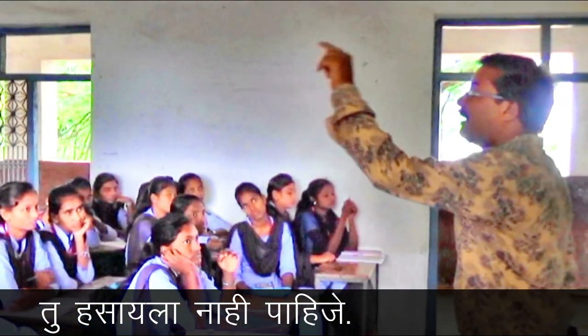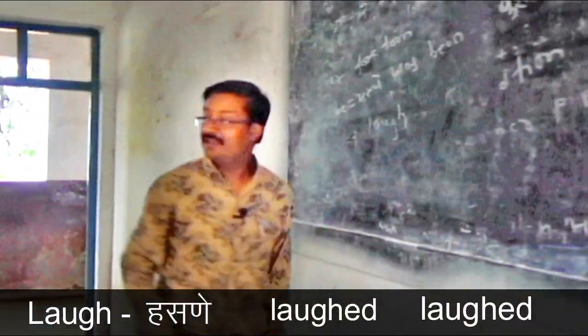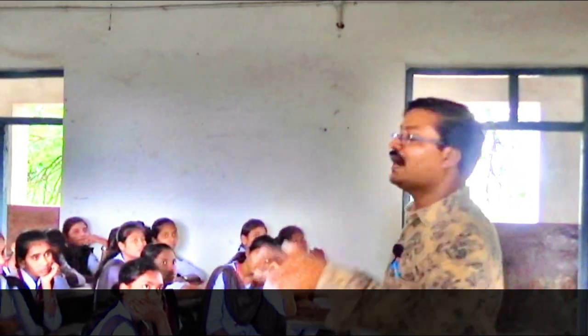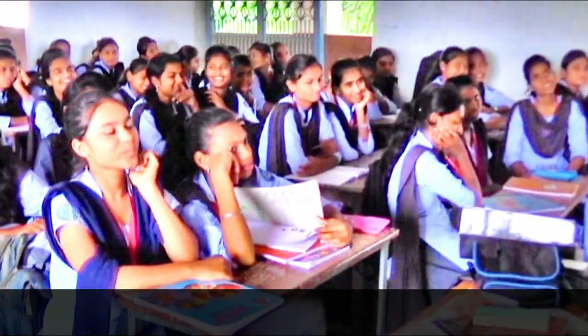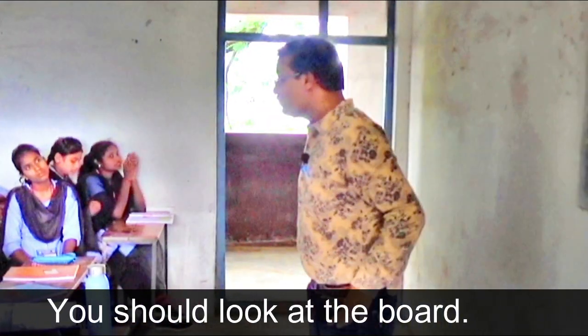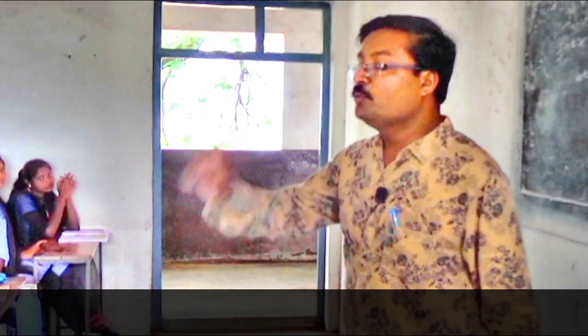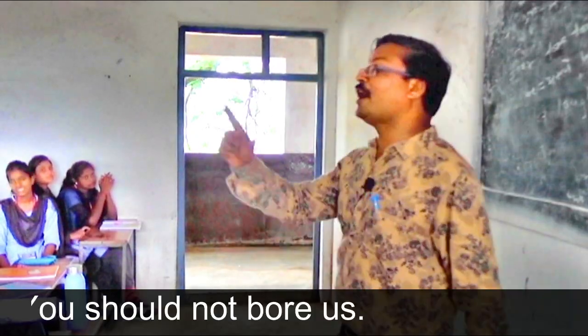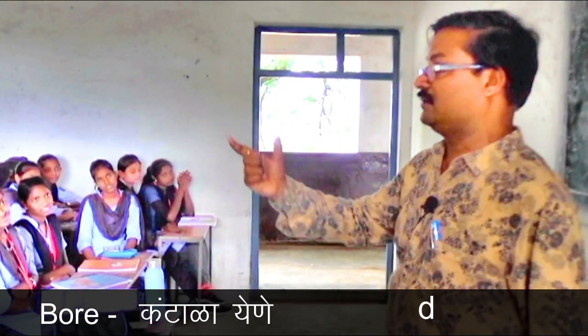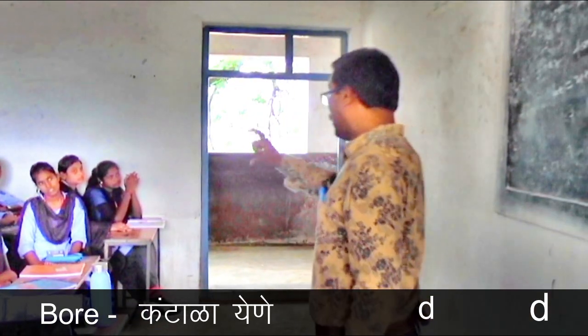'Tu hasala nahi paaije' — You should not laugh. Laugh means harsane, second form: laughed, third form: laughed. 'Tu makcha bencha mula kade nahi paala paaije' — You should not see last bench students. 'Tu ek sar ka board kare paaila paaije' — You should look at the board. 'Tummi amala boar nahi karayla paaije' — You should not bore us. Bore means boar karne, second form: bored, third form: bored, noun form: boredom.